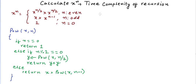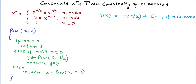Let's say the time taken is T(n). If n is even, we make a recursive call to calculate x to the power n/2, so T(n) equals T(n/2) plus some constant c1 for simple operations like comparison, division, or modulo. If n is odd, we make a recursive call to calculate x to the power n minus one, so T(n) equals T(n-1) plus some constant c2. For the base case T(0), there is just one comparison, so it takes one unit of time.